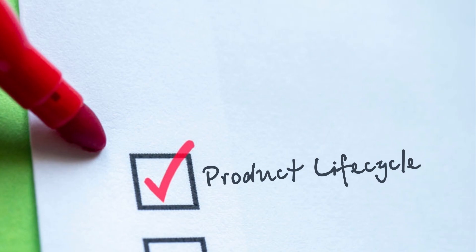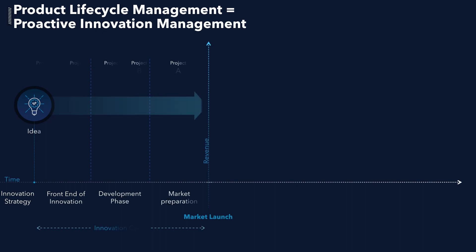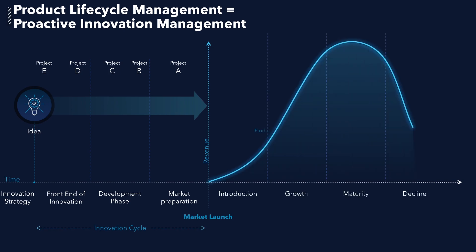Let's talk about how an innovation matures from the innovation cycle to the market. Once an opportunity is identified or an innovation idea is submitted, the innovation cycle starts — typically beginning at the front-end, followed by the development and market launch phases. As the innovation hits the market, it goes through an introduction phase, growth, maturity, and decline. All of these become part of the market cycle. Identifying where your offering is in its lifecycle is a powerful tool to trigger proactive innovation management.